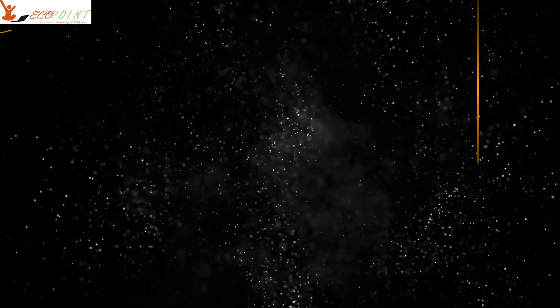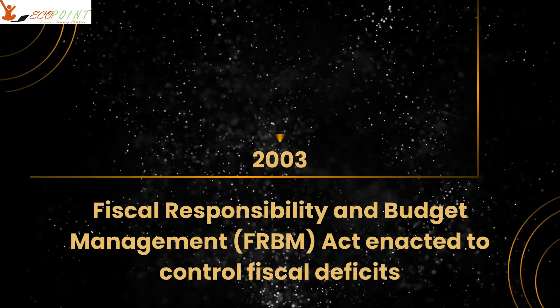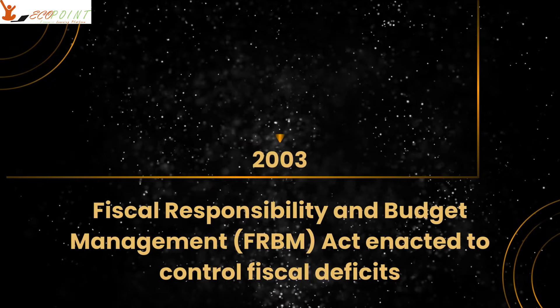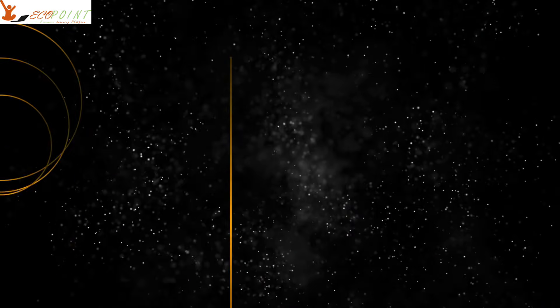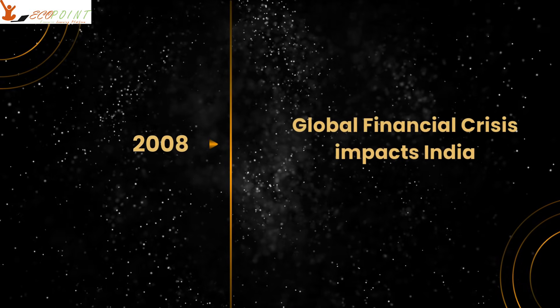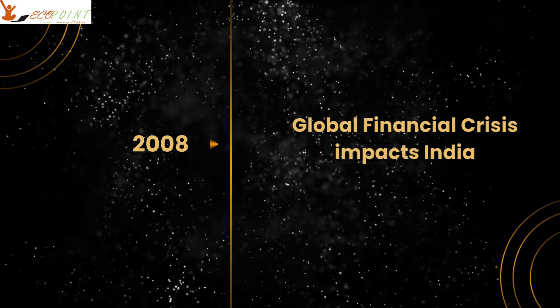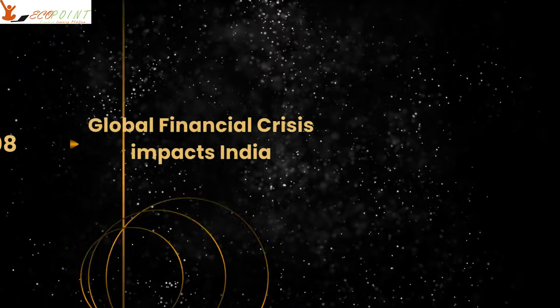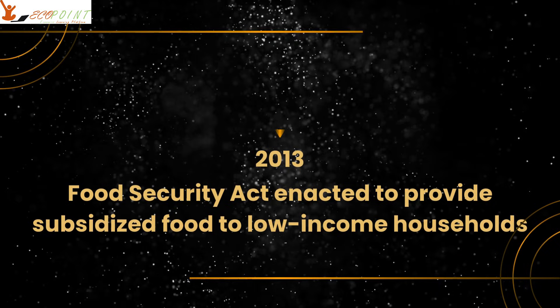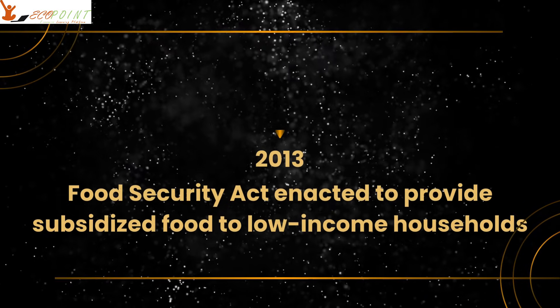In 2003, the FRBM Act was enacted to control fiscal deficits. In 2008, the global financial crisis happened and also impacted India to a certain extent. In 2013, the Food Security Act was enacted to provide subsidized food to low-income households.